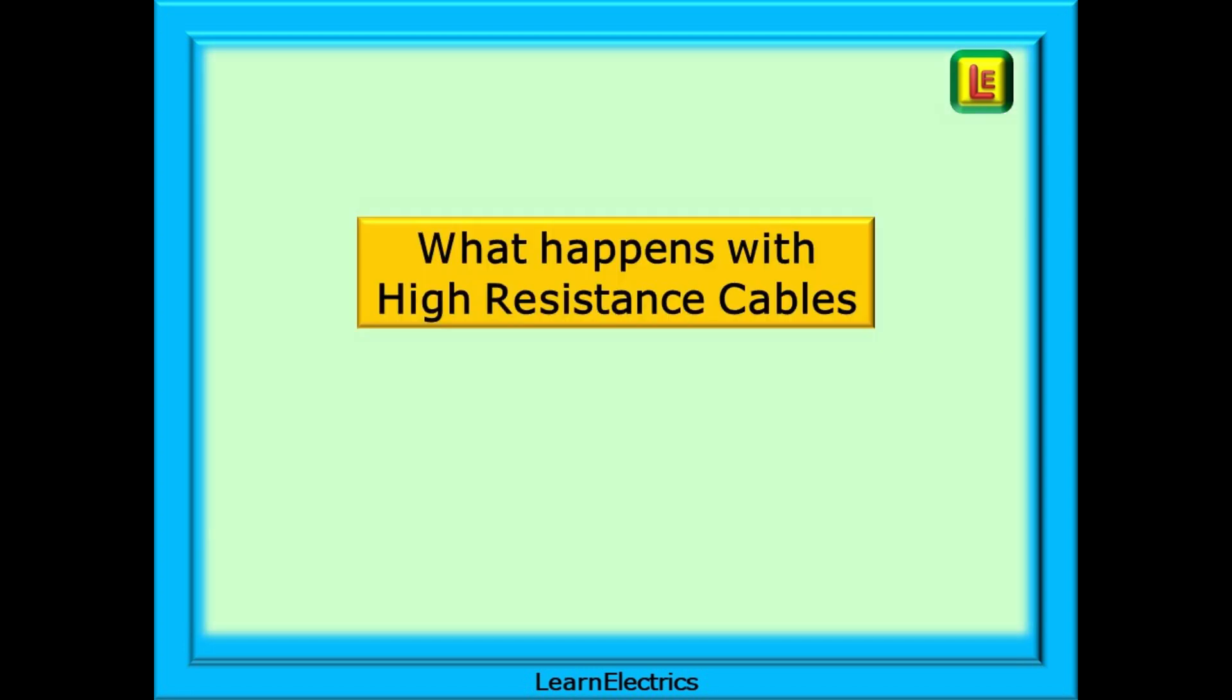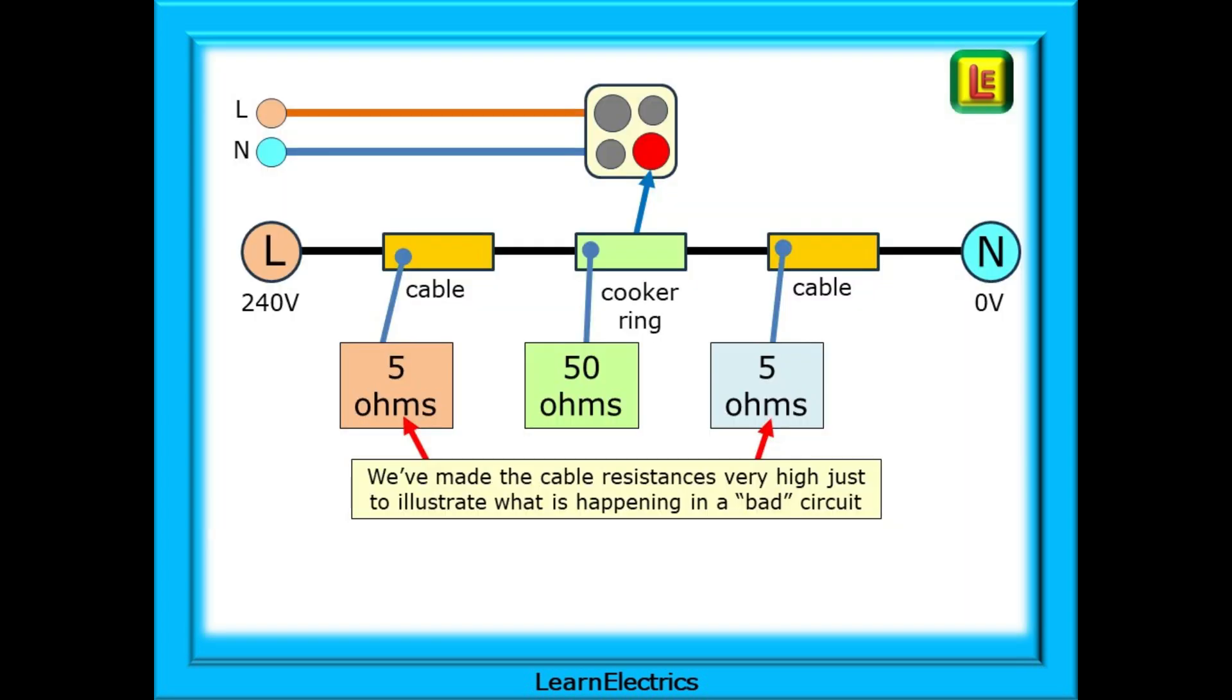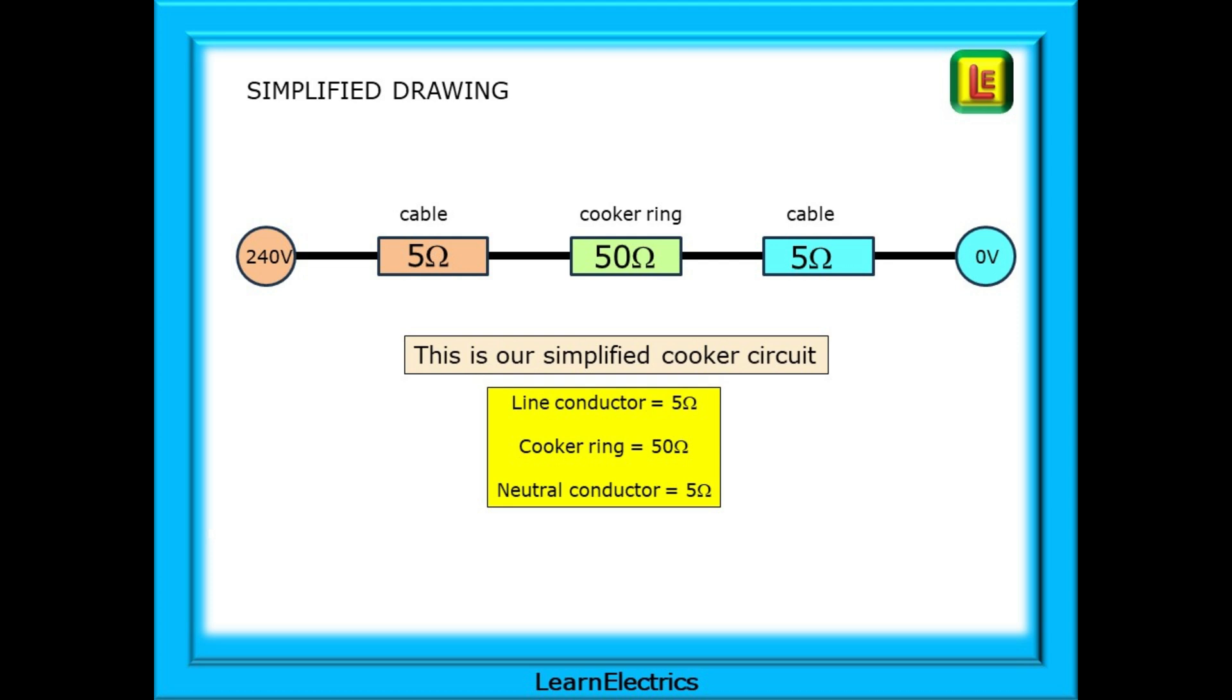Let's begin by looking at what happens in the circuit if we use high resistance cables. How does the cable resistance affect things? We've made the cable resistances very high, just to illustrate what is happening in a bad circuit. The 50 ohm cooker ring or element is connected to the consumer unit by a 5 ohm line conductor and a 5 ohm neutral conductor. Nearly 20% of the circuit resistance is in the cables. And this is our simplified cooker circuit. So let's make some basic Ohm's law calculations on it and see what happens in the circuit.